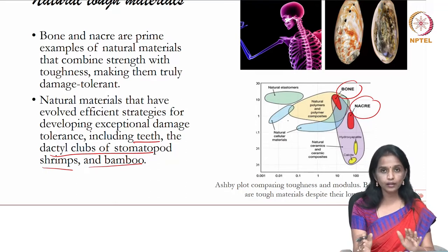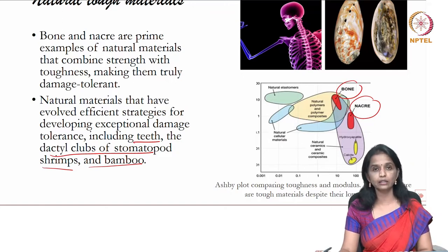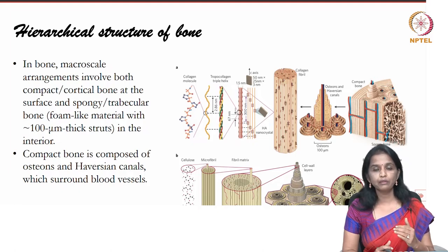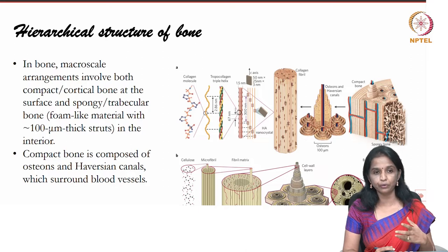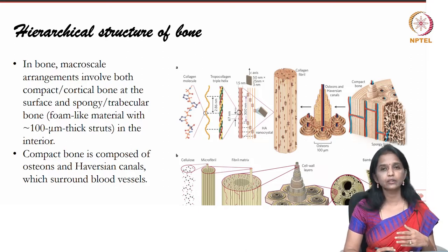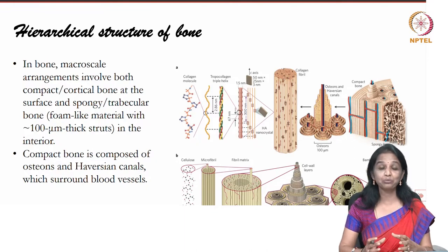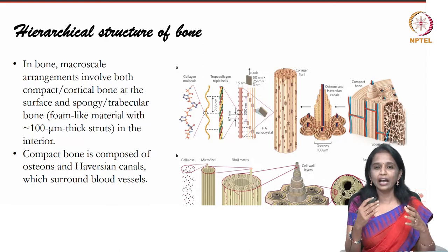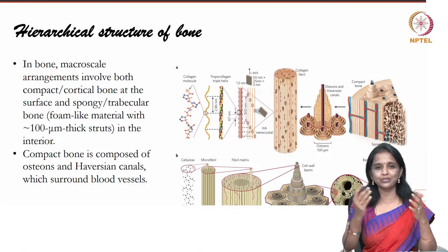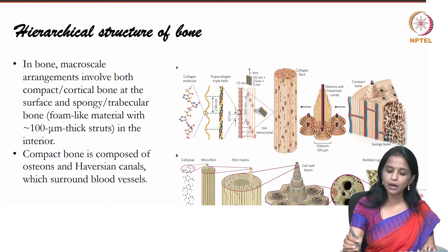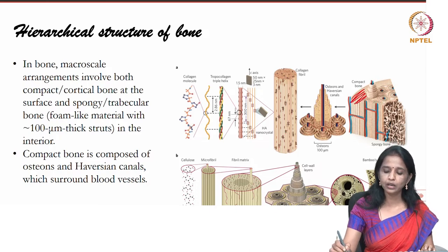A plot comparing toughness and modulus shows that bone and nacre form the toughest structures among natural materials, with very high strength and high modulus. There is a huge requirement for bone graft and replacement materials due to high incidence of trauma and bone-related diseases. To understand how to create replacement materials, we must examine what bone is really made of. Bone has an outer compact bone and an inner trabecular bone — both very important architectural components.